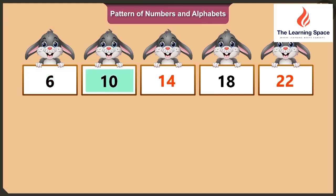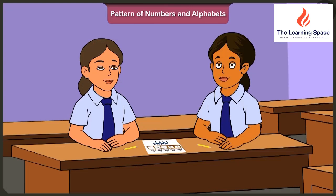After eighteen, nineteen, twenty, twenty-one, twenty-two. That means we get twenty-two on adding four to eighteen. Very good, Vinny. Here is the puzzle made with this number pattern. Four is added every time. Six, ten, fourteen, eighteen, and twenty-two. Oh yes, you have solved the puzzle.